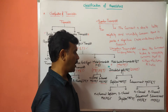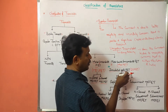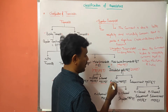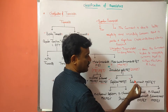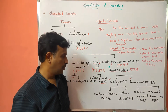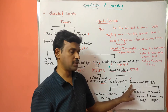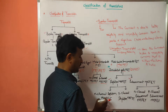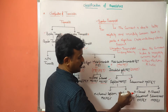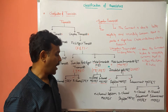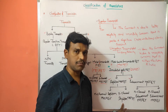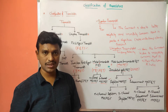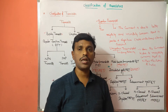Under MOSFET we have two types: the first one is depletion MOSFET and the second one is enhancement MOSFET. The depletion MOSFET has N-channel and P-channel types. Similarly, the enhancement MOSFET also has N-channel and P-channel types. Nowadays we primarily use J-FET and MOSFET; MESFET is not commonly used.